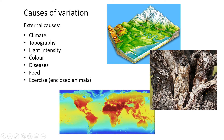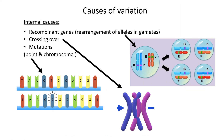If animals die because of the environment, genes cannot be passed on to progeny. There are also internal causes of variation. The first is recombinant genes — basically the rearrangement of alleles in gametes. Take one individual: in each of its cells it has, for argument's sake, four chromosomes — one each from mom and dad. This individual has 50% from mom and 50% from dad.